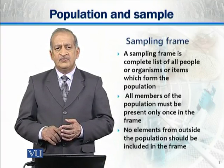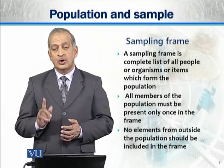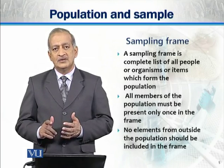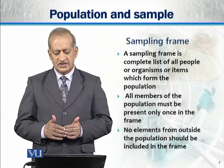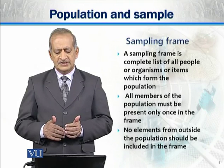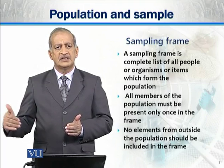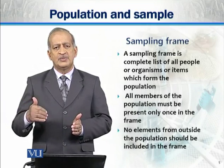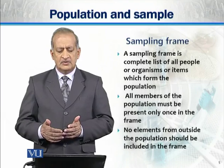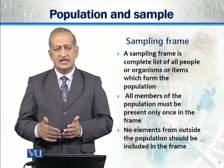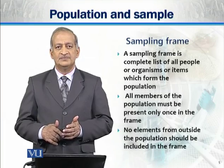We will also discuss the sampling frame. The sampling frame is a complete list of all people, organisms, or items which form one population. All members of the population must be present only once in the frame — no member should appear multiple times. Additionally, no element from outside the population should be included in the frame.